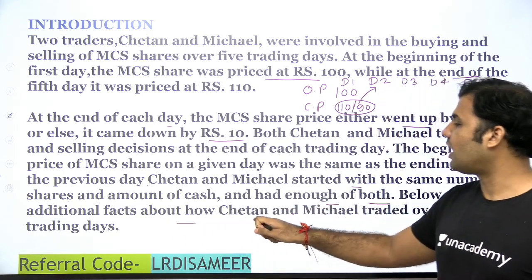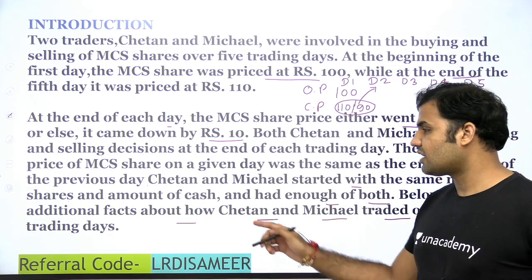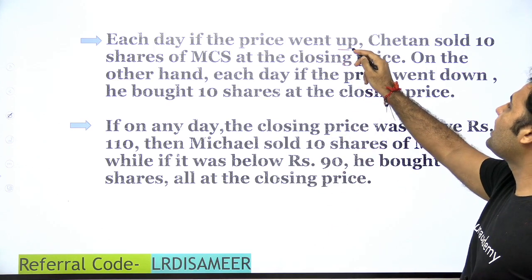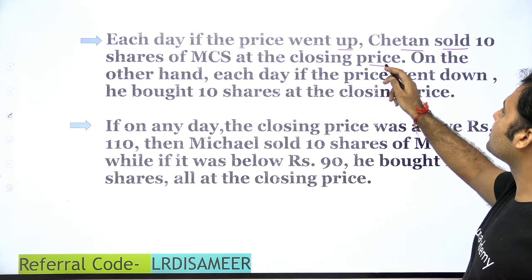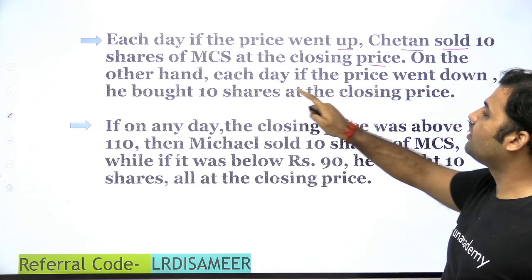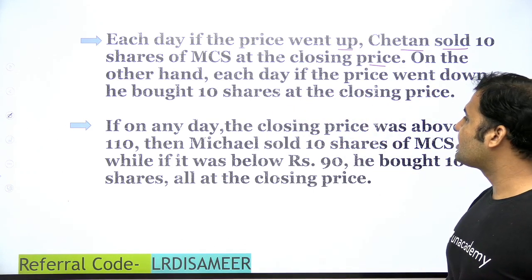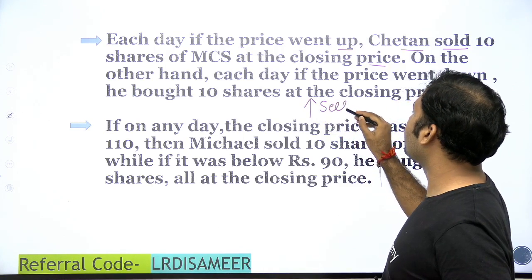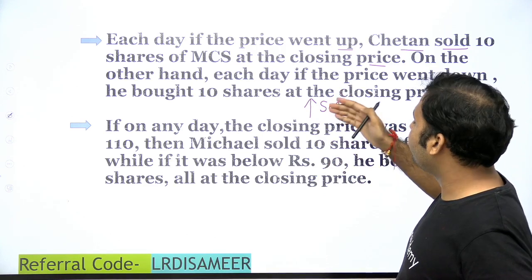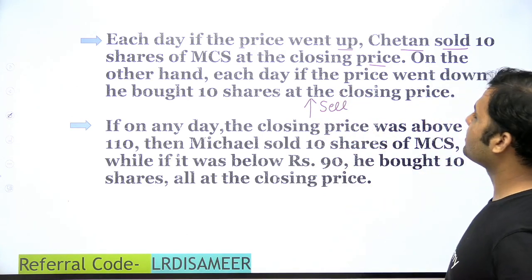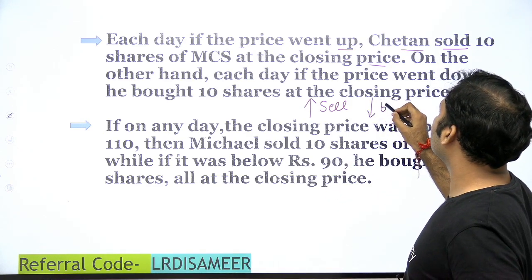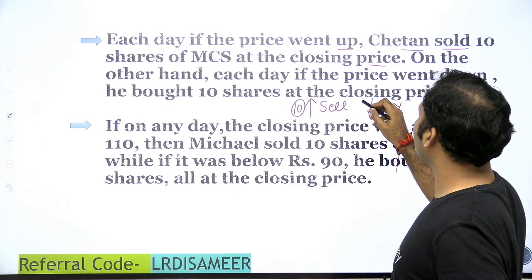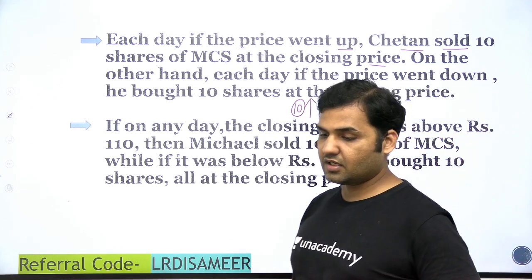Now, below are some additional facts about how Chetan and Michael traded over the five trading days. These are two important points to note down. Each day, if the price went up, Chetan sold 10 shares of MCS at the closing price. On the other hand, each day if the price went down, he bought 10 shares at the closing price. So Chetan's strategy is: price goes up → Chetan sells 10 shares; price goes down → Chetan buys 10 shares. This is Chetan's trading strategy.